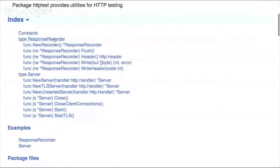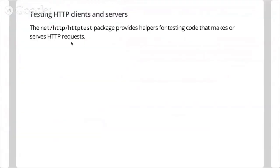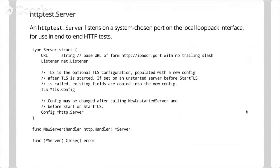The most important things in the httptest package are the Server type and the ResponseRecorder type. The test server implements an HTTP server using the net/http package — you pass a handler to httptest.NewServer, it listens on a random port on localhost, and returns a server with the URL field populated, something like http://localhost:3000/. In your tests you make requests to that server, and when finished you call the Close method.